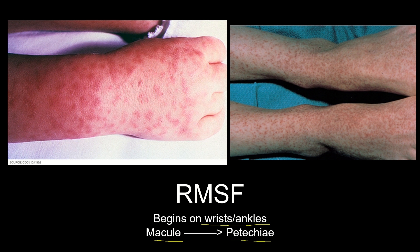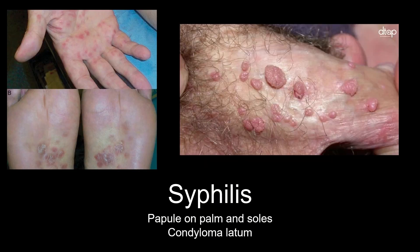Syphilis, on the other hand, will have a rash on the palm and soles quite early on in the presentation, as opposed to Rocky Mountain Spotted Fever where it appeared later in the course. Condyloma latum is a cutaneous condition where wart-like lesions appear on the genitals.